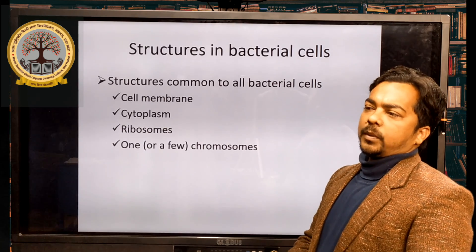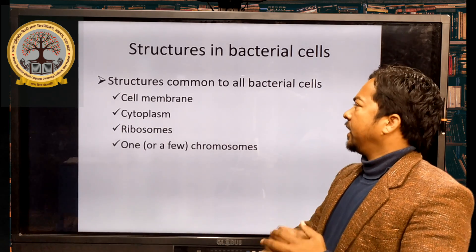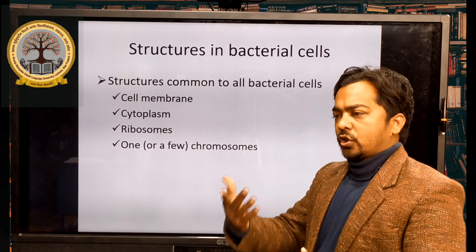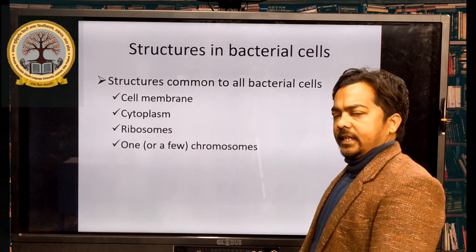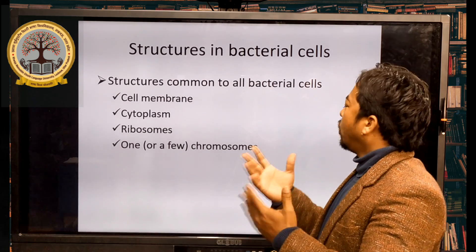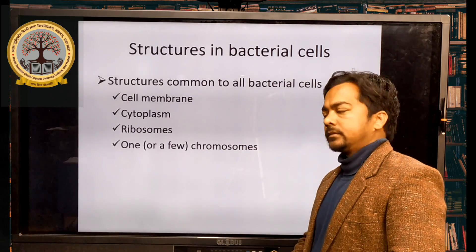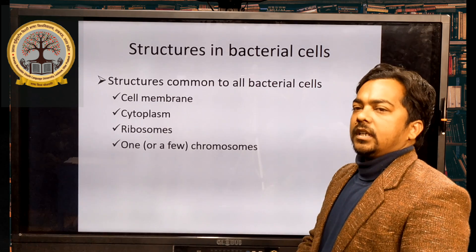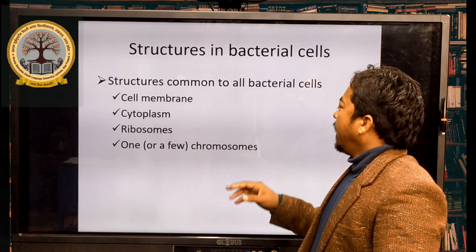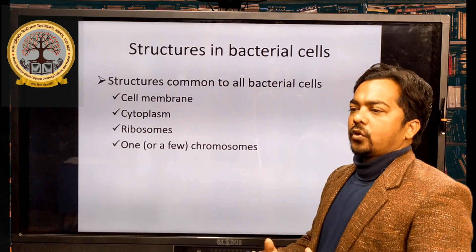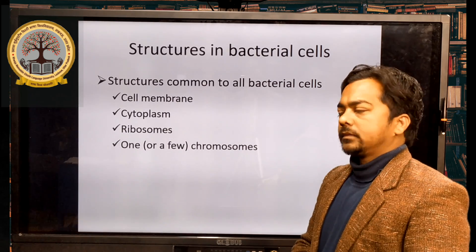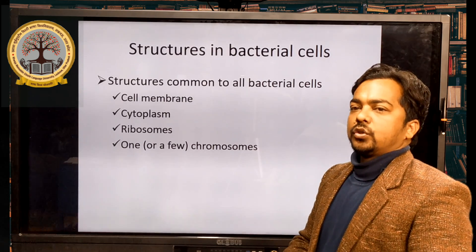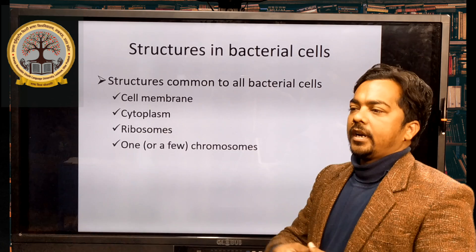Structure of bacterial cells: when we discuss about prokaryotic cells, we first study the structure of bacterial cells, because bacteria are the most common prokaryotic cells. The common structures include cell membrane, cytoplasm, ribosomes — prokaryotic cells have 70S ribosomes — and one or a few chromosomes. One circular chromosome which is not bound by a membrane, like eukaryotic cells, is known as a nucleoid.